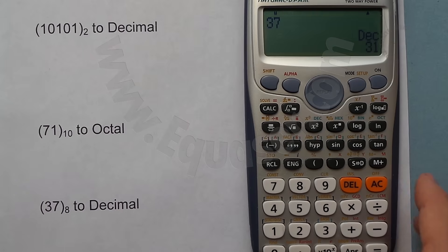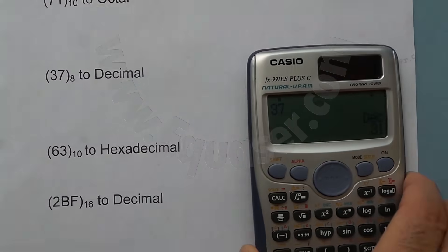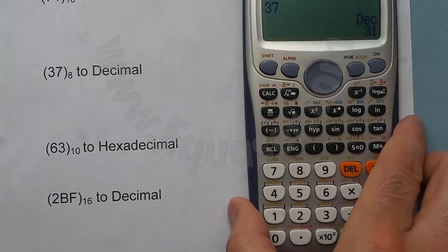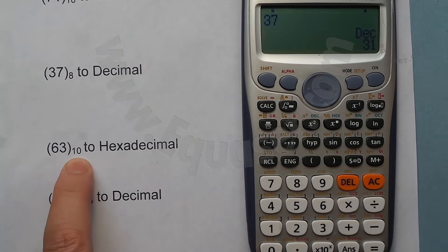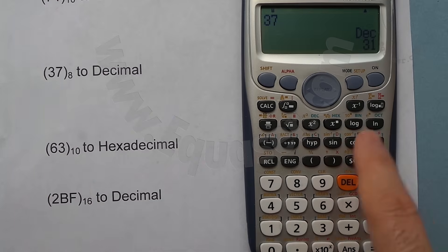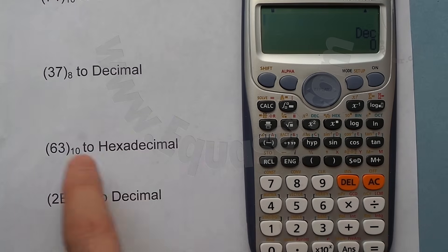The same way we can do hexadecimal. This is base 10, which is decimal—our regular numbers that we use in daily life. 63, equal sign, and then hexadecimal refers to base 16. Now I press Hex. This is 3F.